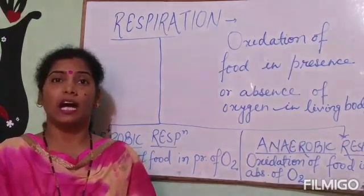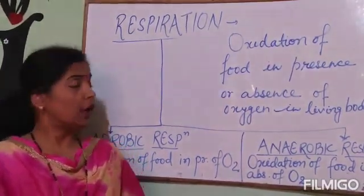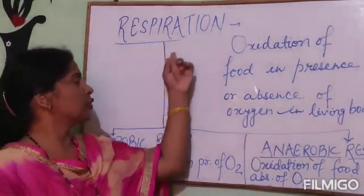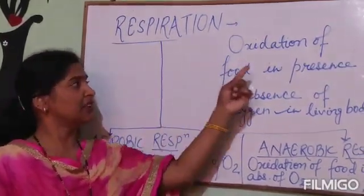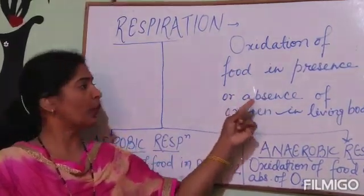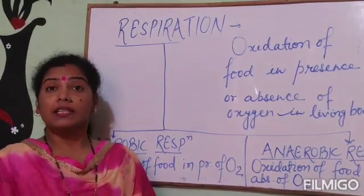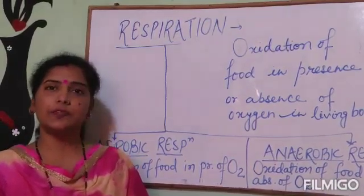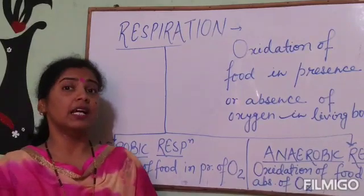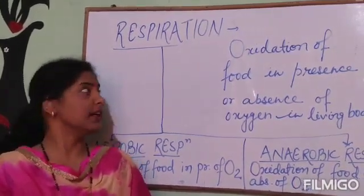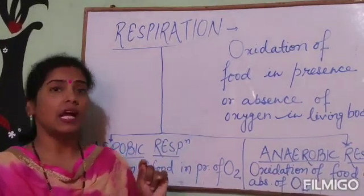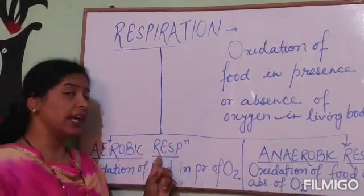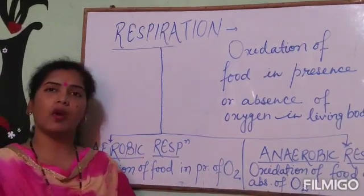Now we move towards our next life process, which is respiration. We have already read about nutrition and now we move towards respiration. What do you mean by respiration? Respiration means oxidation of food in the presence or absence of oxygen inside a living body — the breaking of food substances to release energy. On the basis of availability of oxygen, it is divided into two parts: aerobic respiration and anaerobic respiration.